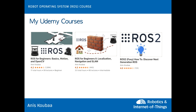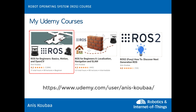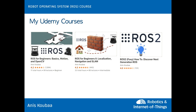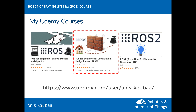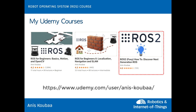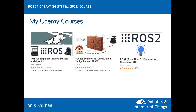This course is the first in my three Udemy courses on ROS. In this first course, you will learn all the core concepts of ROS, in addition to motion, computer vision, and different types of perception sensors. My second course — Part Two — which is a bestseller, focuses on localization, navigation, and building maps with robots using SLAM techniques. Finally, my third course covers the next-generation version of ROS, that is ROS 2, which is still under development.